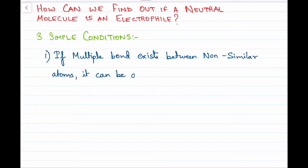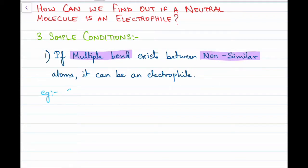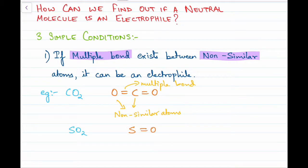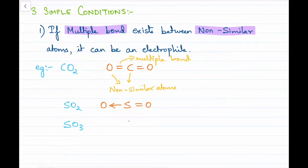Condition number one: if a multiple bond exists between non-similar atoms, then it can be an electrophile. For example, CO2 — there is a multiple bond between carbon and oxygen, which are non-similar atoms, so CO2 is an electrophile. Similarly, SO2 has multiple bonds between sulfur and oxygen, so SO2 is an electrophile.